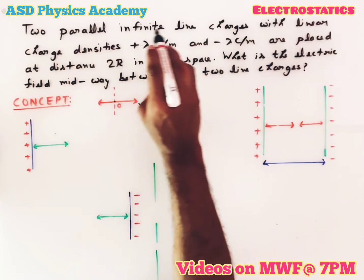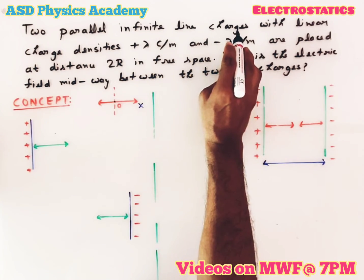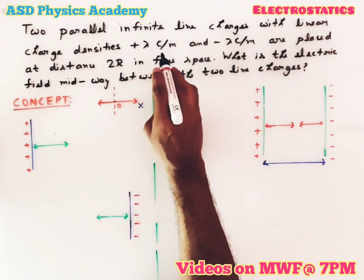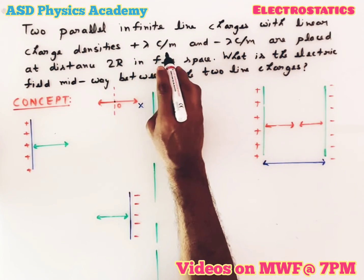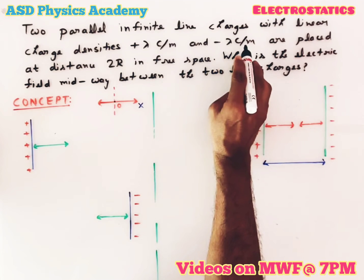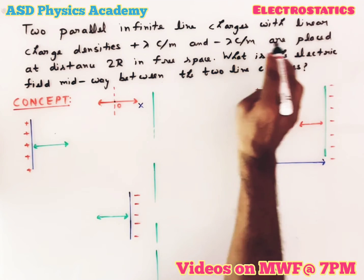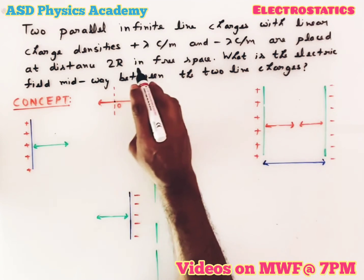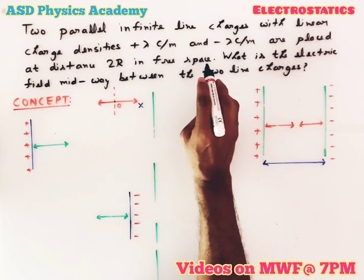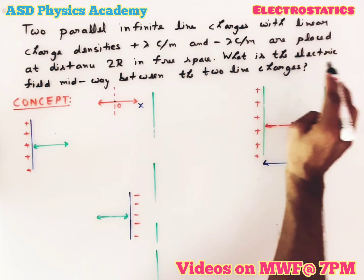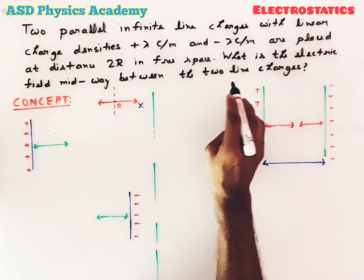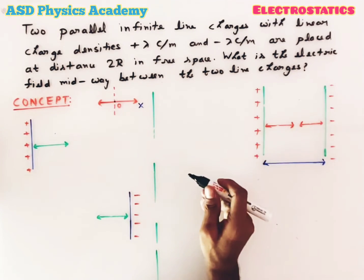Two parallel infinite line charges with linear charge densities plus lambda coulomb per meter and minus lambda coulomb per meter are placed at distance 2r in free space. What is the electric field midway between the two line charges?